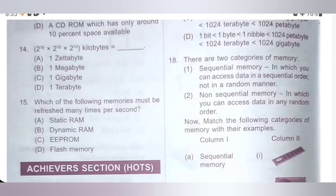Fourteenth question. 2^10 × 2^10 × 2^10 kilobytes is equal to: A) 1 zettabyte; B) 1 megabyte; C) 1 gigabyte; D) 1 terabyte. The correct answer is option D — 1 terabyte.